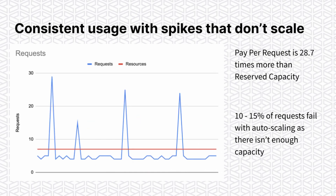The next use case is consistent usage with short spikes occasionally. These spikes are short — maybe a couple of seconds — so you don't have two consecutive minutes of high throughput to trigger the auto scaling. What happens is you just have spikes where any requests beyond the provisioned capacity are throttled. This may actually be cheaper using reserved capacity by about 28 times, but the issue is that 10 to 15 percent of your requests will fail as there isn't the capacity to deal with them — which is obviously a major issue.